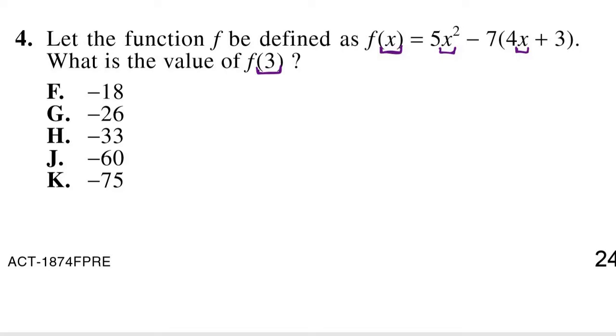So let's rewrite that equation by using 3's instead of x's. So we have 5 times 3² minus 7 times (4 times 3 + 3), and we know that's equal to f(3). From here, we can just simplify using our orders of operation. So we know we have to do parentheses and exponents first. So we have 3², that's 9, minus 7 times 4 times 3, that's 12 plus 3.